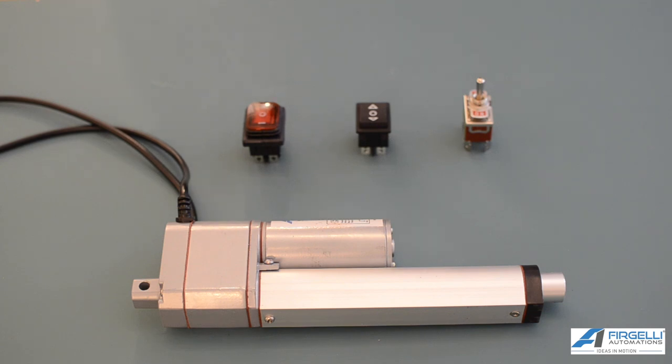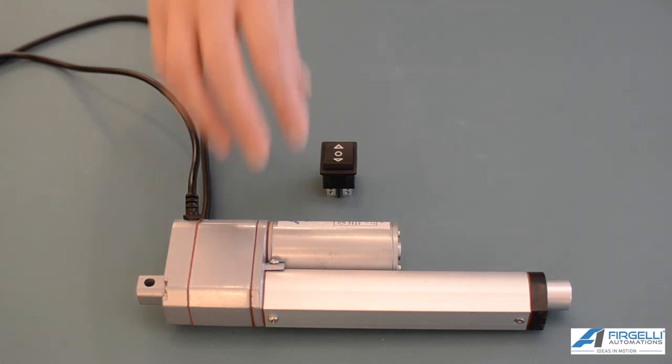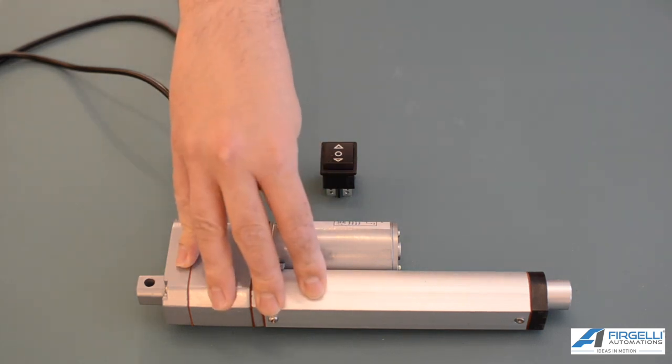If you ever feel like your momentary switch is sticking into an on position that's probably meaning that you're overloading your switch. Once you have chosen the switch that's right for you the wiring connections to control the linear actuator is fairly straightforward.